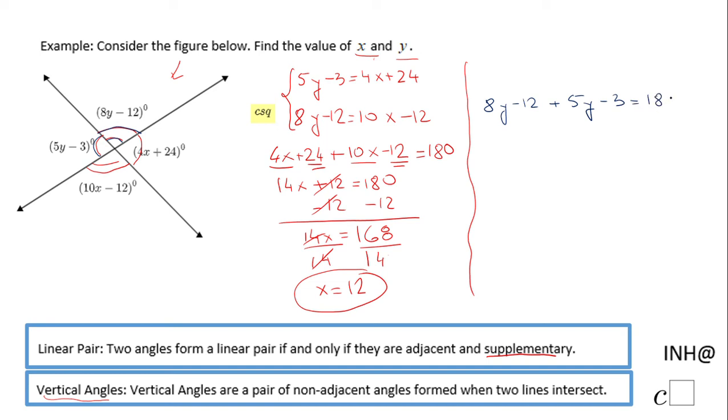So we're going to combine the y's. 5y plus 8y, that is 13y. Negative 12 minus 3, that is minus 15, equals 180. We're going to add 15.